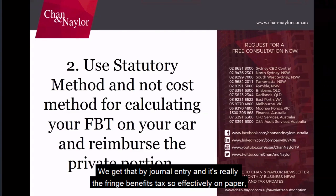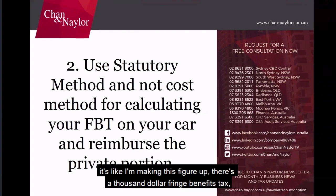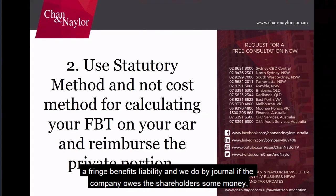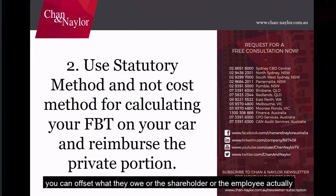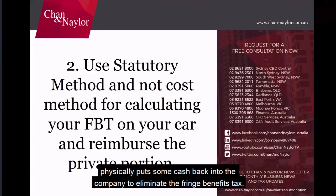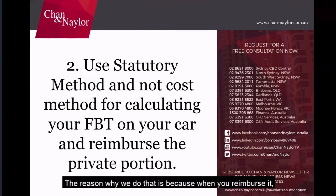Effectively on paper, say there's a $1,000 fringe benefit liability. We offset it by journal entry — if the company owes the shareholder some money, you can offset that, or the employee physically puts some cash back into the company to eliminate the fringe benefits tax. The reason we do that is because when you reimburse it, the tax rate is only 27.5%, whereas fringe benefits tax is over 48%. That makes it much more efficient.